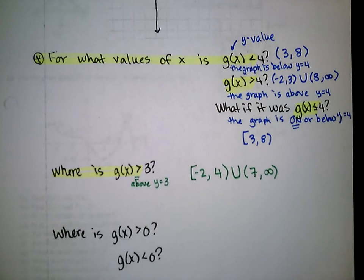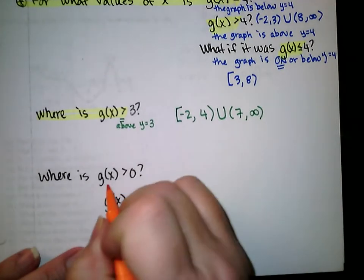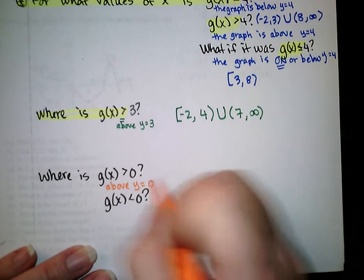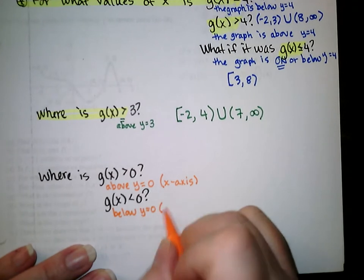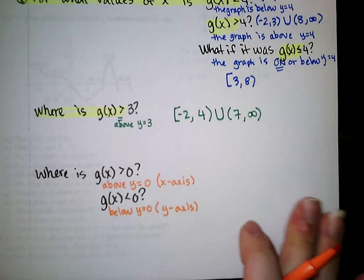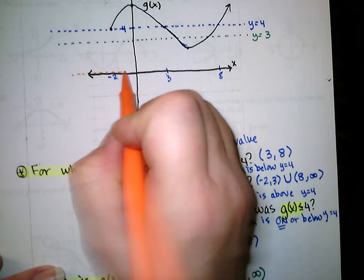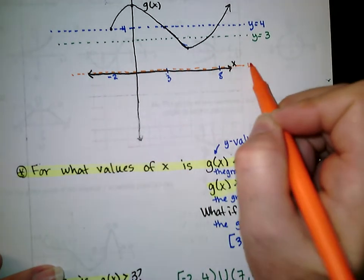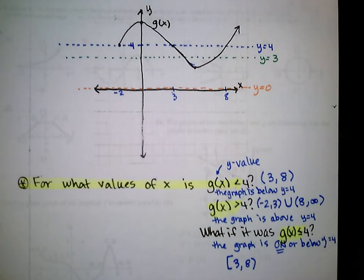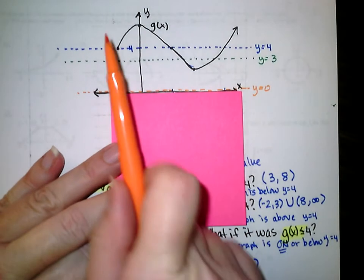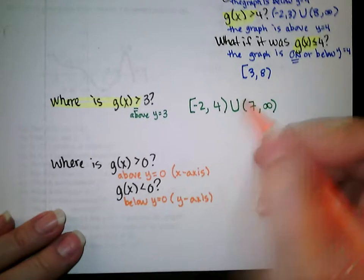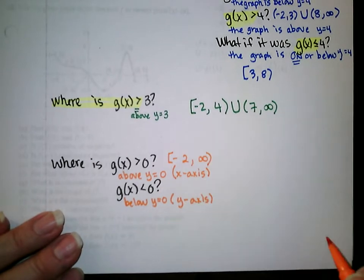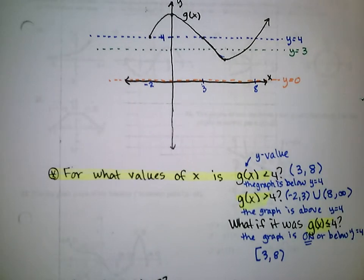Where is g of x greater than 0? Greater than 0 means above y equals 0, which is the x-axis. Where is g of x less than 0 means below y equals 0. Looking at y equals 0 — the x-axis — where is this graph above that line? Well, everywhere the graph exists: starting at x equals negative 2 all the way to infinity. So the graph is above y equals 0 from negative 2 to infinity. And where is it below y equals 0? There's no graph below it, so that would be nowhere.